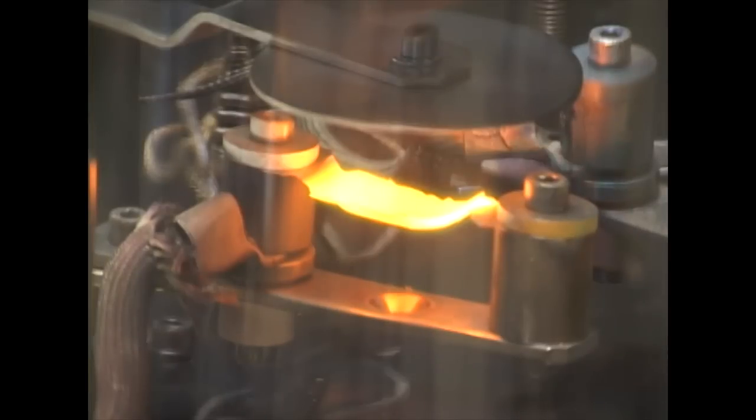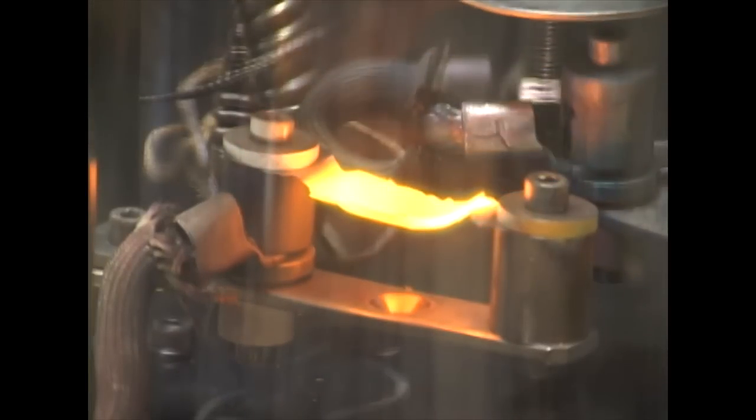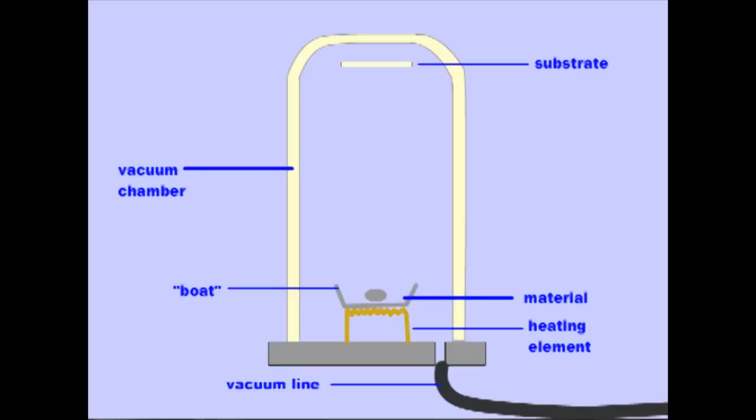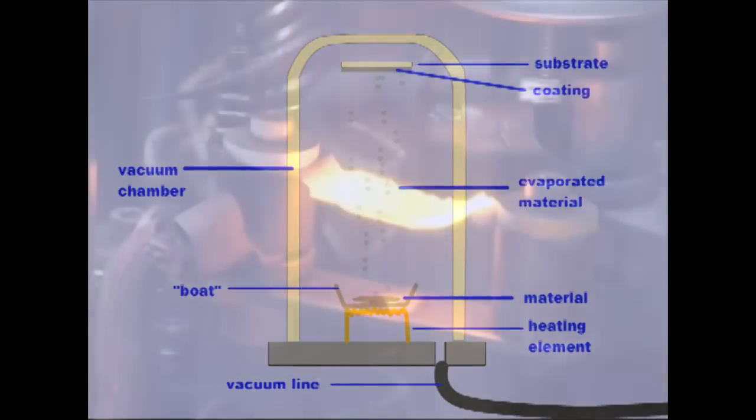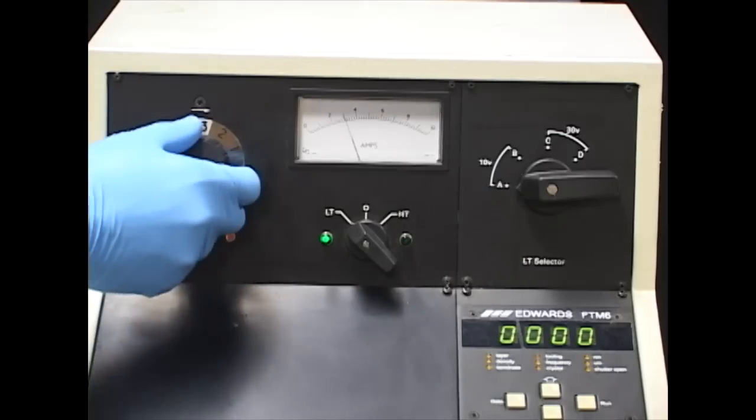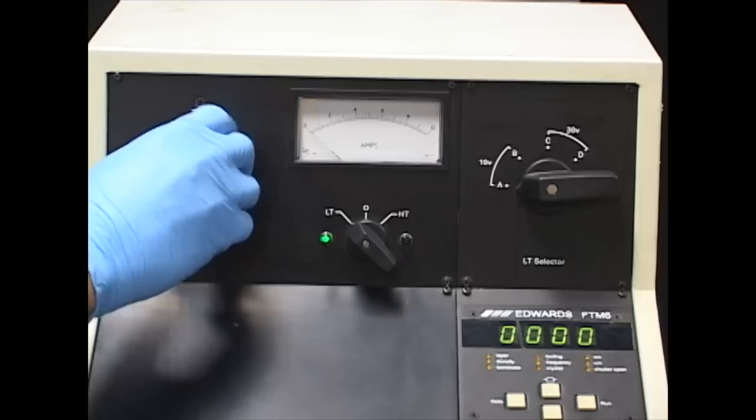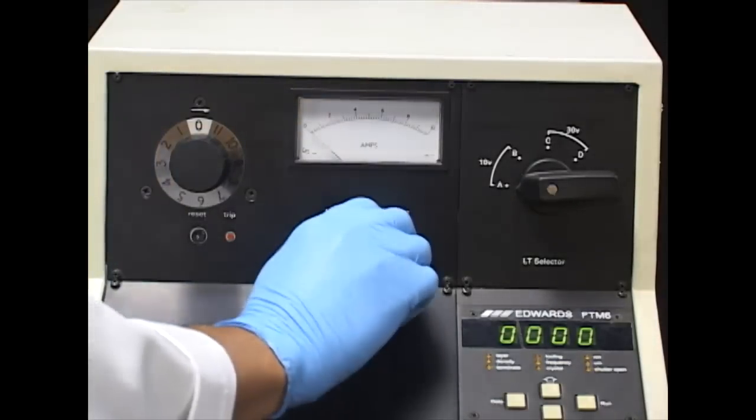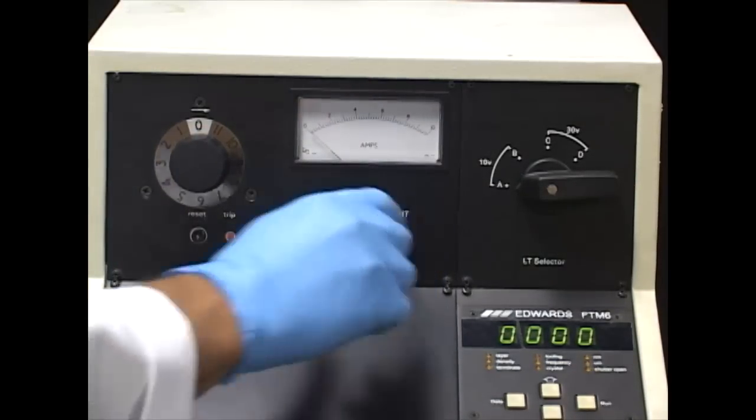When our material is melted, we can move the shield aside and allow the material to deposit onto our substrate. We wait until we get our desired thickness on the substrate. Then we can gently close the shield. Now we turn the current knob all the way back to zero, and we turn the station knob from LT to zero again.